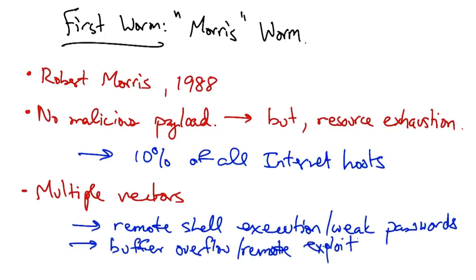The second way that it spread was a buffer overflow vulnerability in the finger daemon. This was a standard buffer overflow exploit. If you don't know about buffer overflows, I would urge you to take a computer security course. Essentially, this is a very common attack that makes remote exploits possible, effectively resulting in the ability to run arbitrary code at the root level privilege.